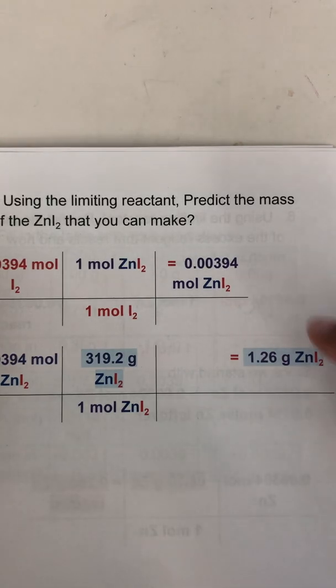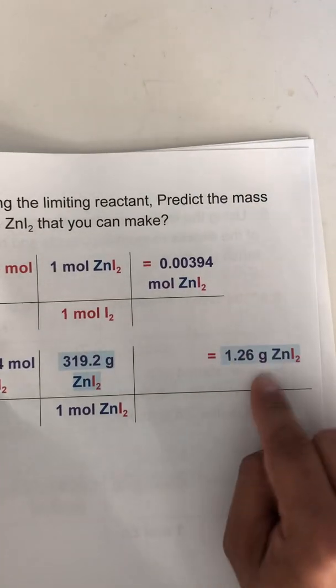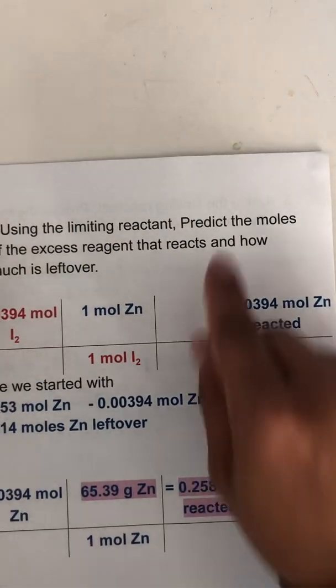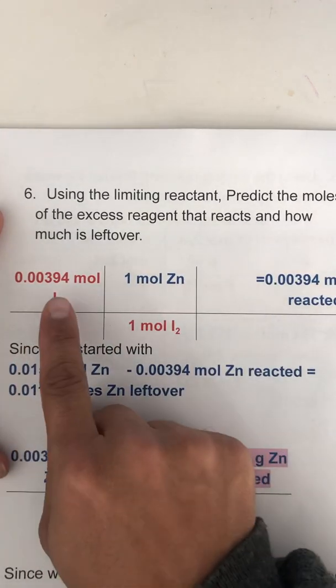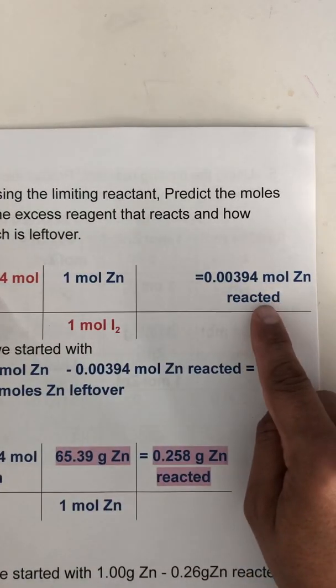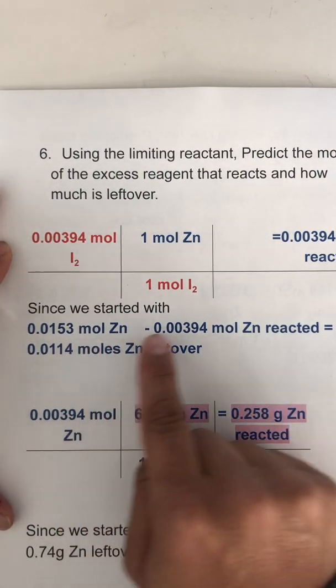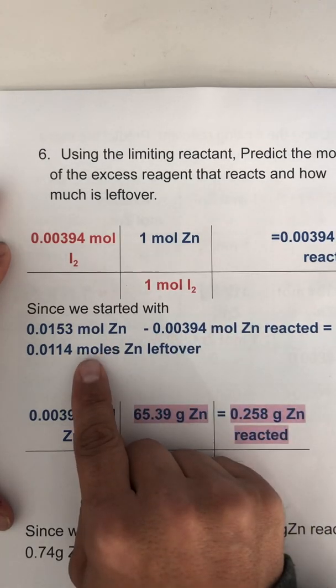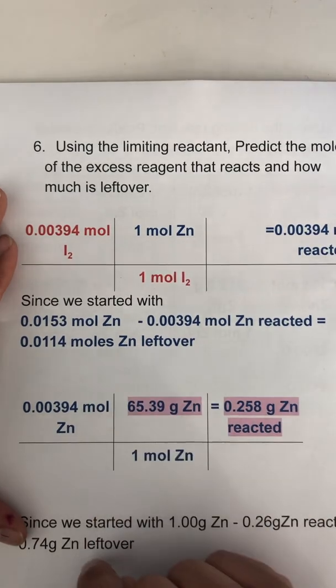This is how many and this is how much. This is a number and this is a weight or a mass. So this is how much we should get. Using the limiting reactant, predict the moles of the excess reagent. So let's figure out how much of the other reagent we used up. Start out with the limiting reactant. We know that we have to react 0.00394 moles of zinc. So since we started with this many moles of zinc and we subtract how much reacted, we should have this much zinc left over. Since in the lab we're going to measure mass, let's figure out how much that would weigh.